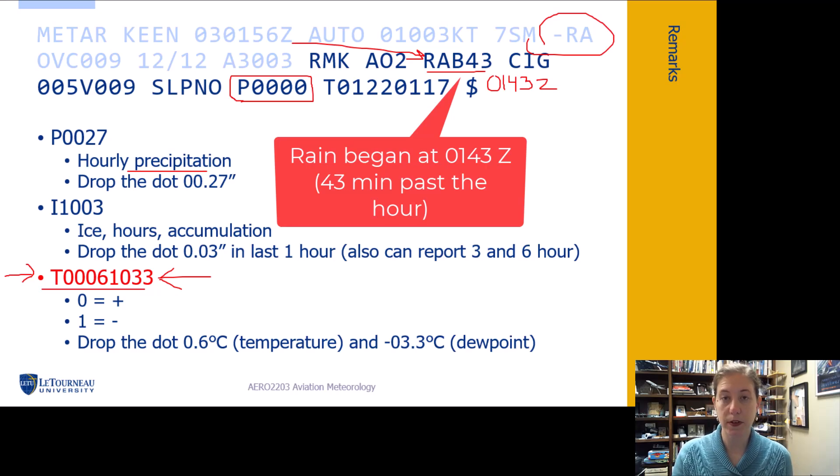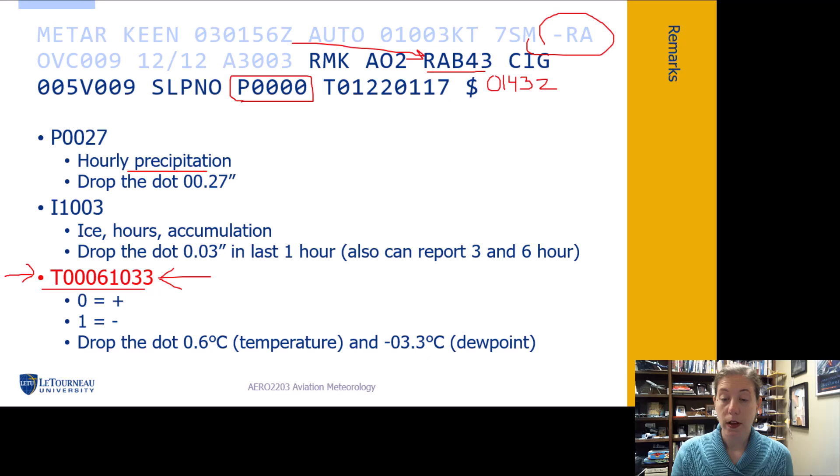Ice, if it starts with I. So again, we can get basically it tells us in the last hour one right there and we have 0.03. We would add the point back in here. 0.03 has fallen in the last hour. This group, it can also record three and six hour as can precip. If they change this to a three, they can report in the last three hour precipitation.